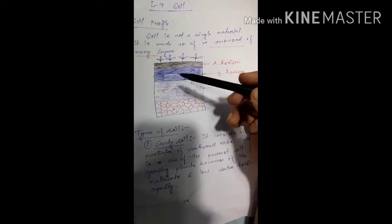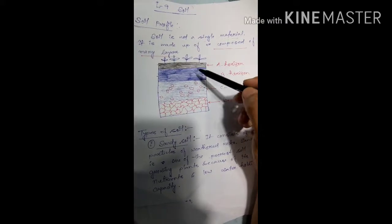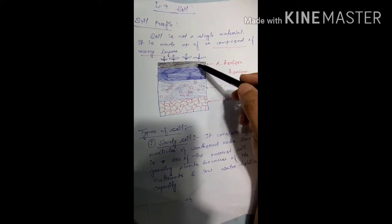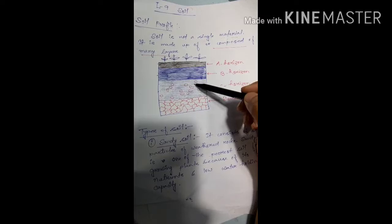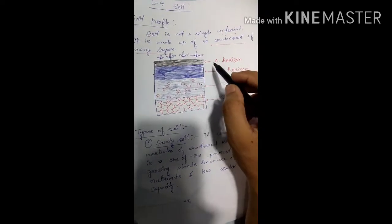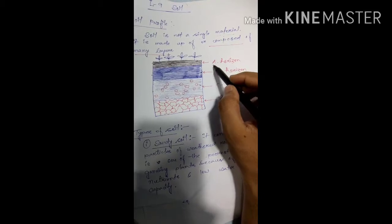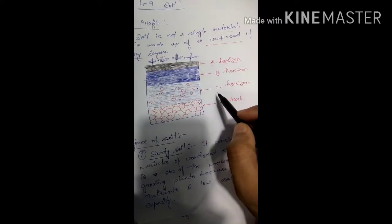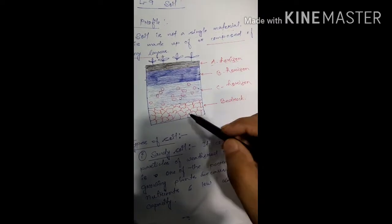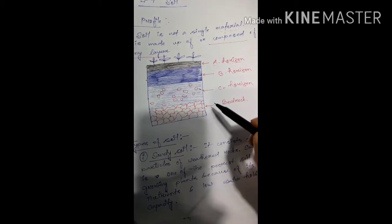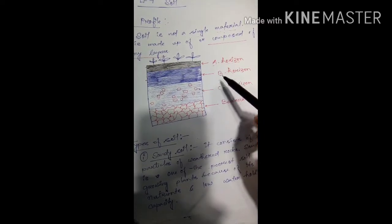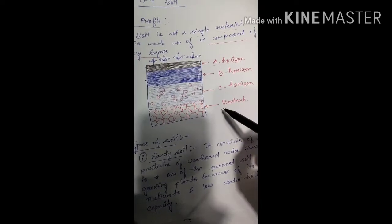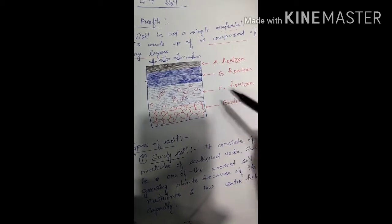If you see this picture, you can see four layers marked with different colors so you can easily understand. There are basically four layers: Layer 1, 2, 3, and 4. The first layer is called A horizon, the second is B horizon, the third is C horizon, and the fourth is not D horizon — it is bedrock. So: A, B, C, and Bedrock.